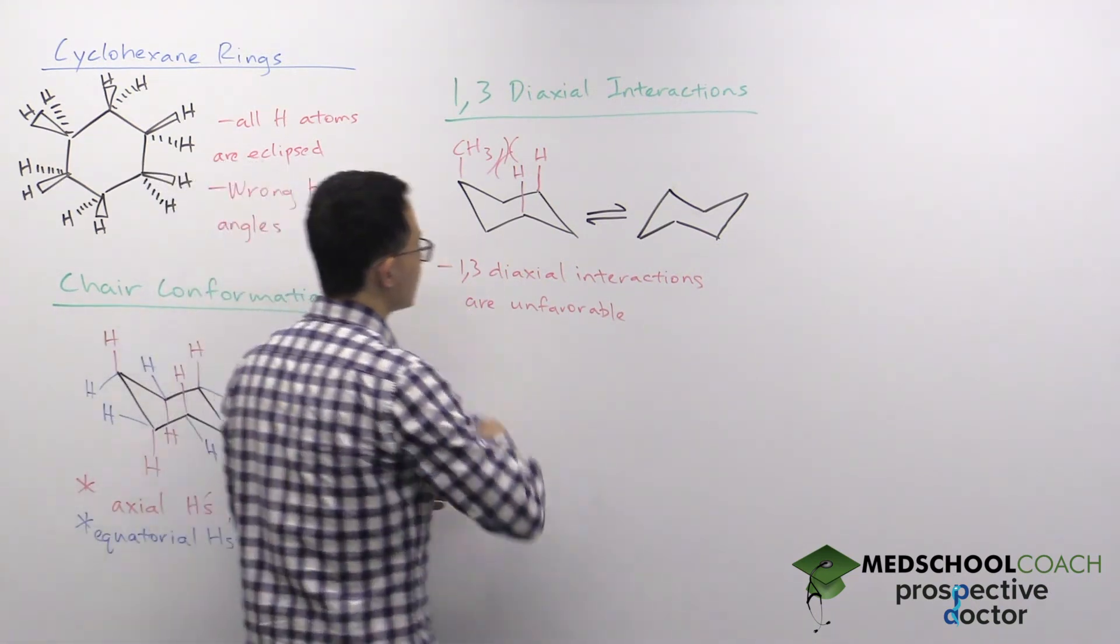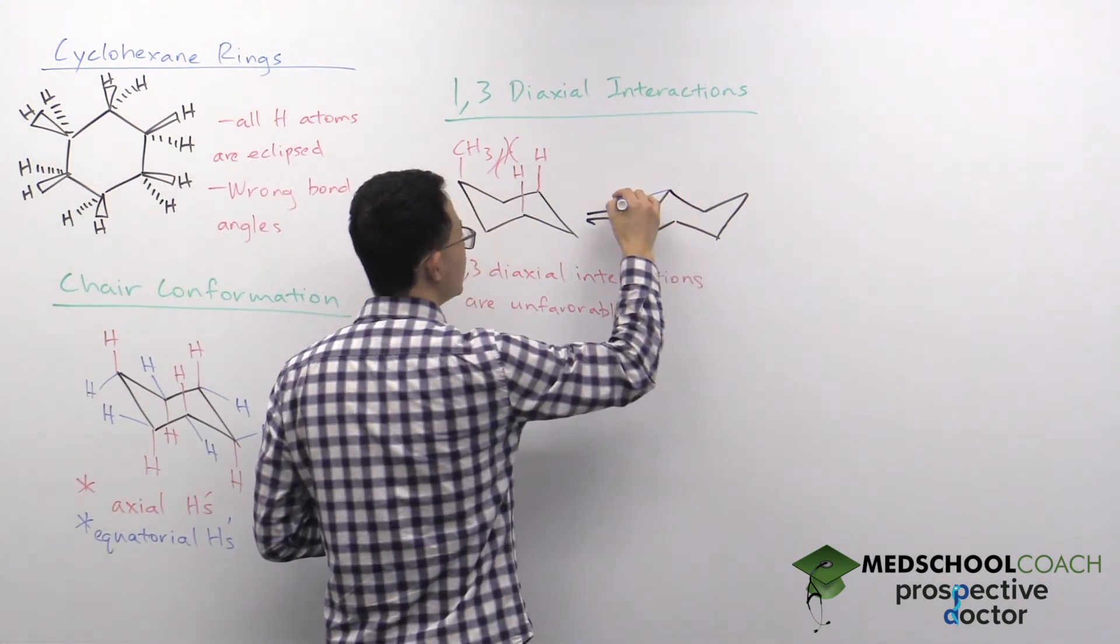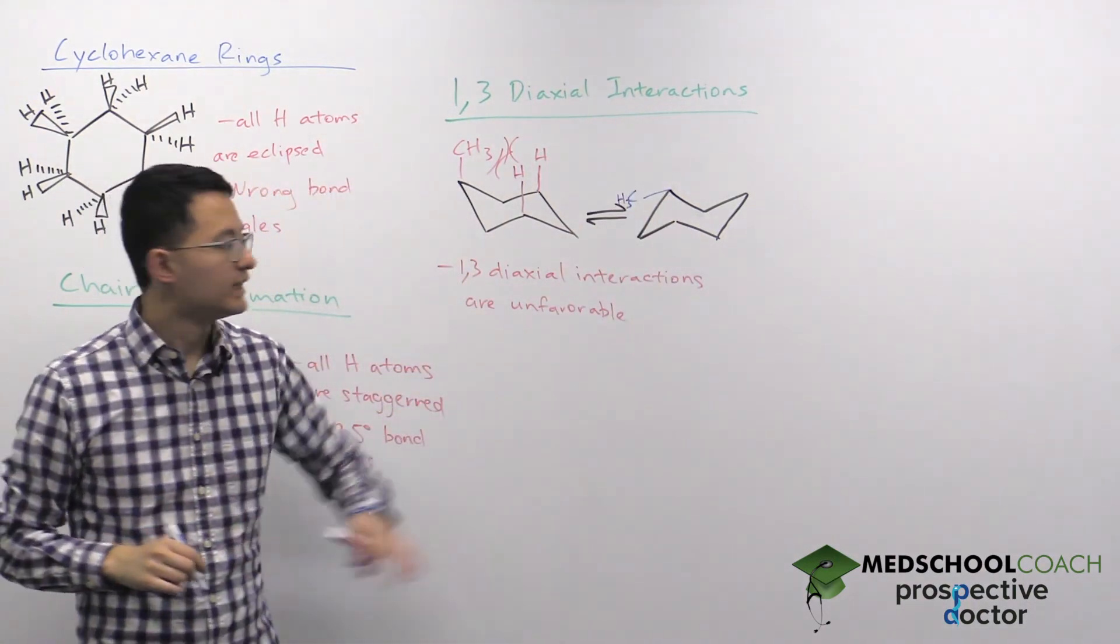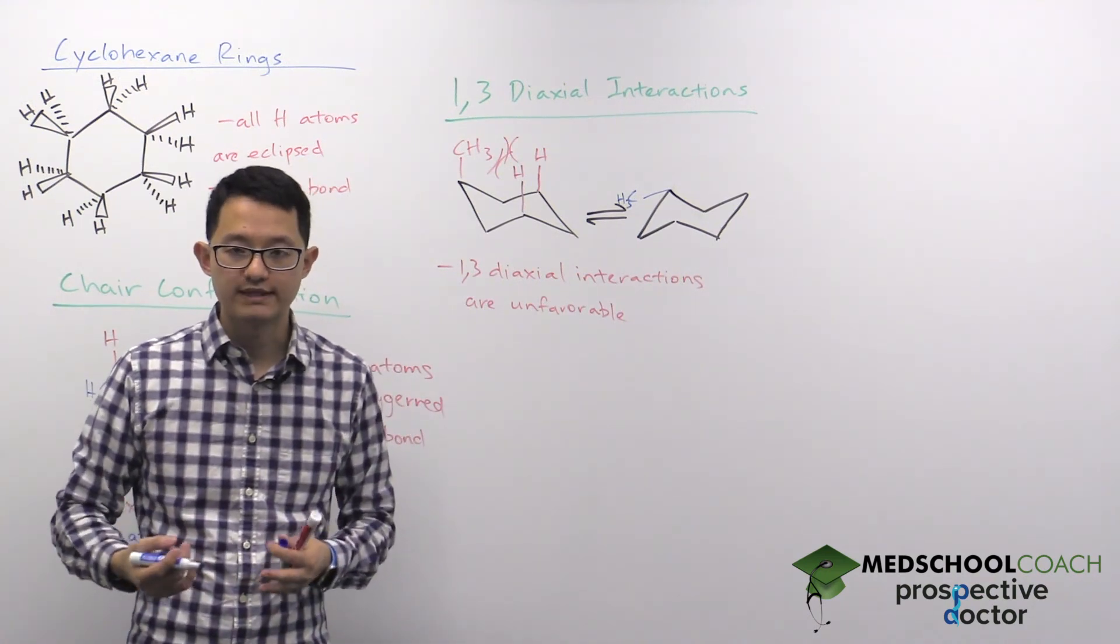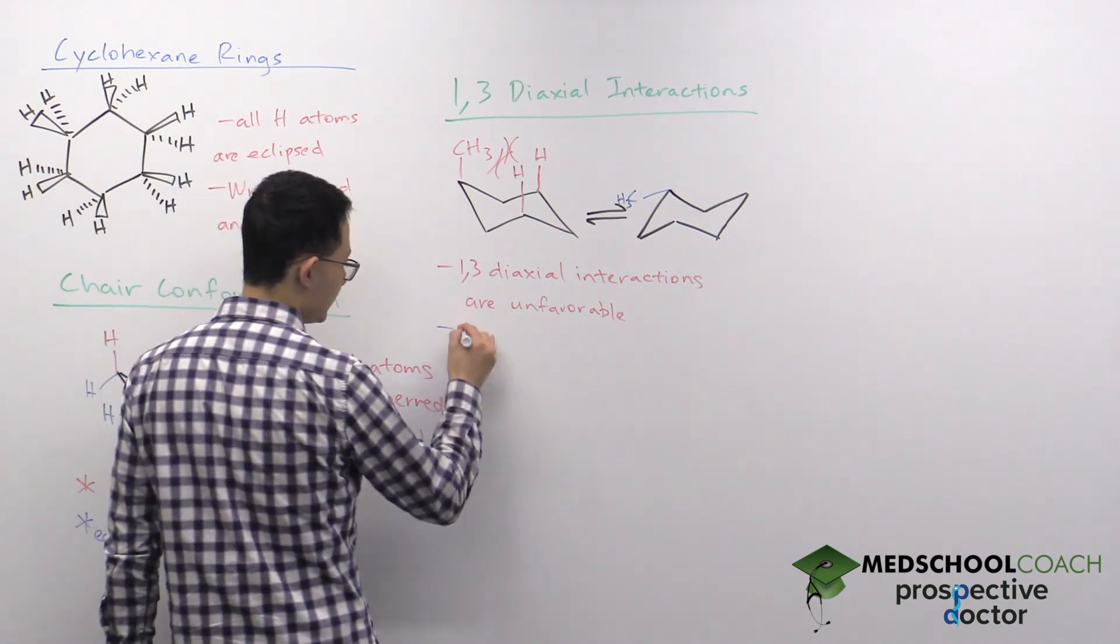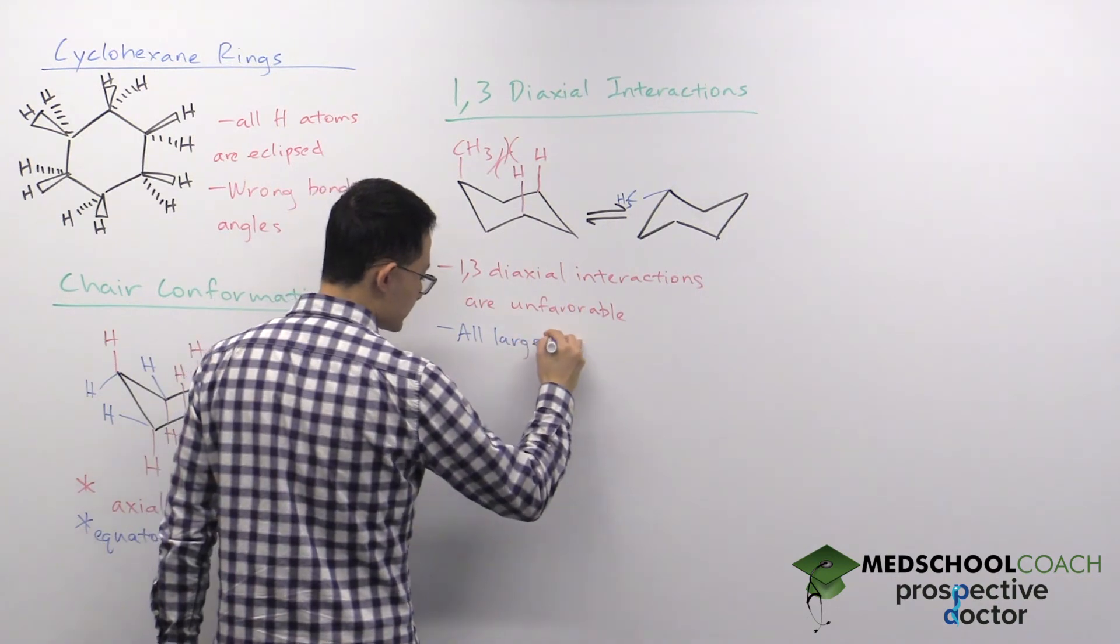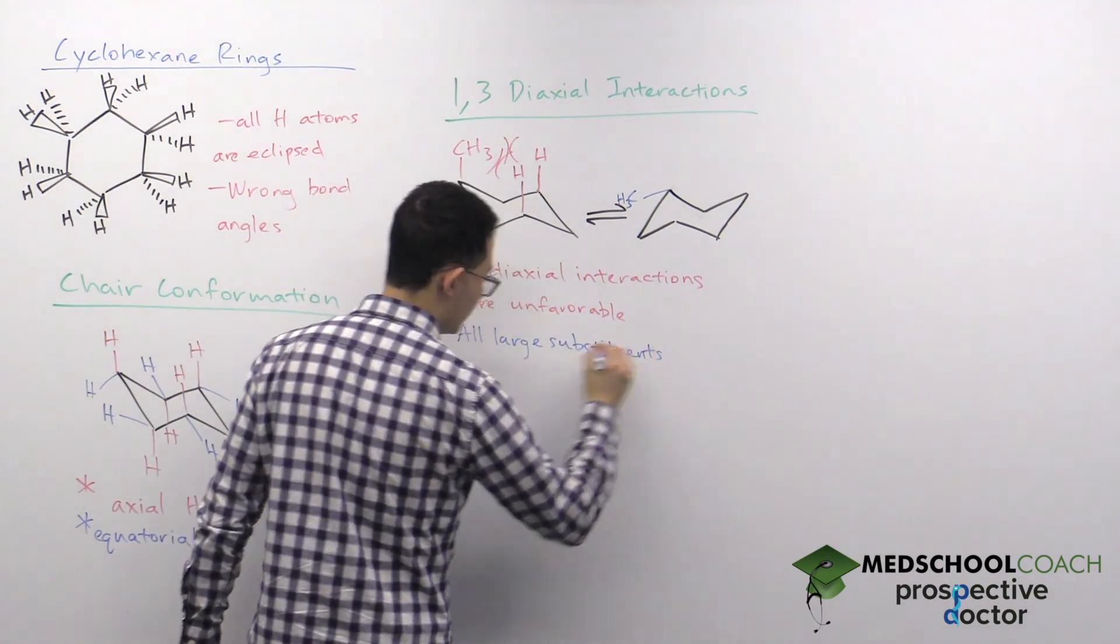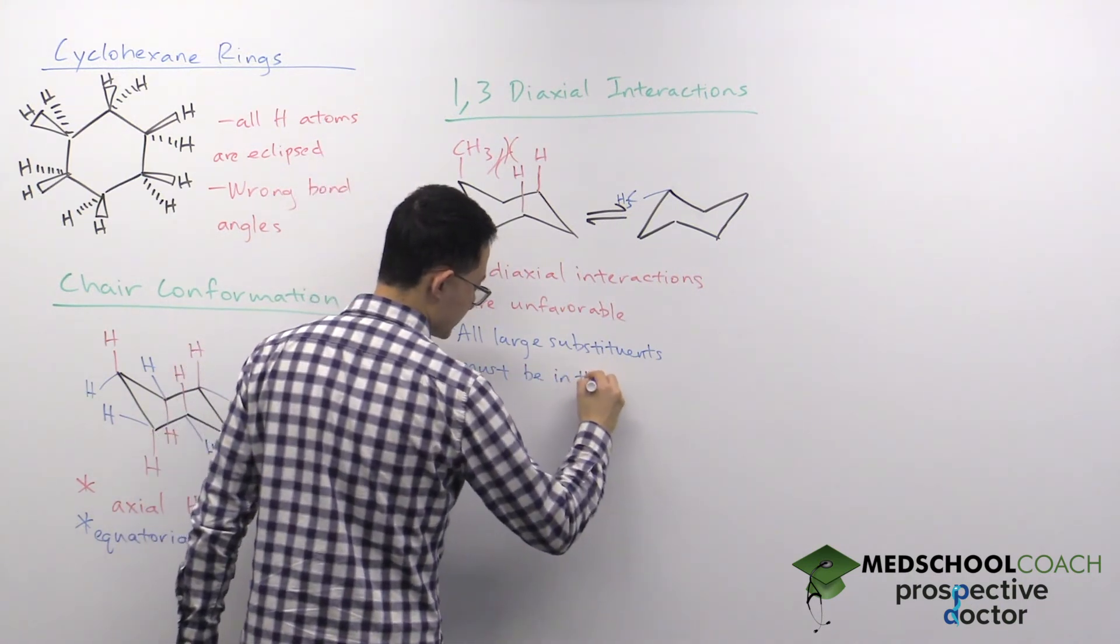After doing the flip, your methyl group would now take on an equatorial position. In this equatorial position, it no longer has 1,3-diaxial interactions. So the main point for you to know for the MCAT is that all large substituents must be in the equatorial position.